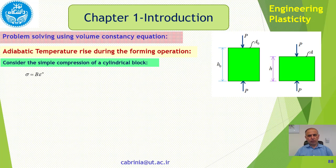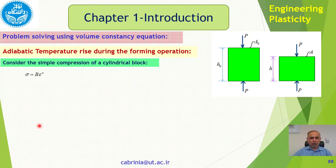In this slide we are going to solve some problems. The problem we are dealing with is adiabatic temperature rise during the forming operation. In previous slides I talked about plastic deformation and said that when we have plastic deformation, most of the energy is dissipated as heat and only a small percentage, about 5%, is spent for the deformation itself. Here we are going to see how much energy is released and dissipated as heat and how it increases the temperature of the process. We are going to use volume constancy to solve this problem.